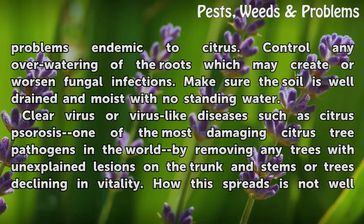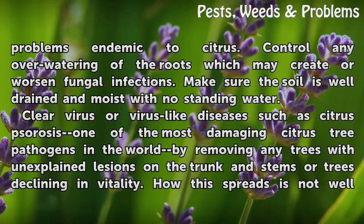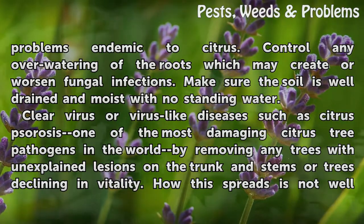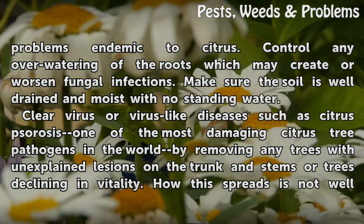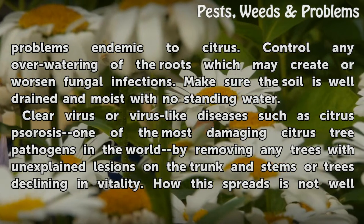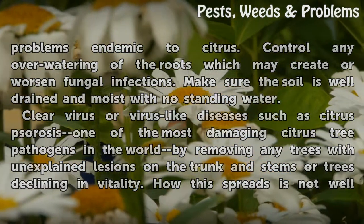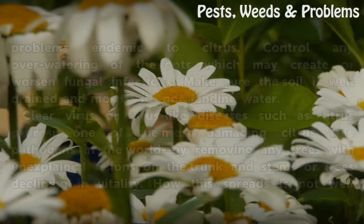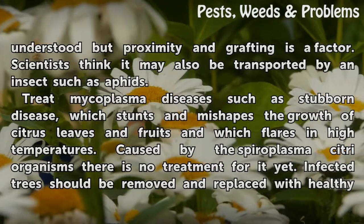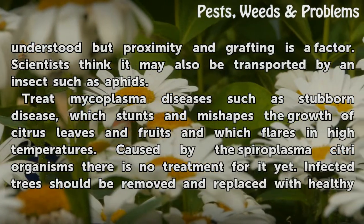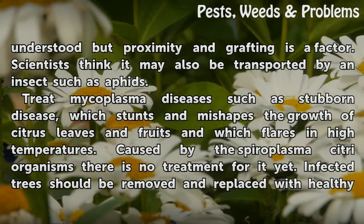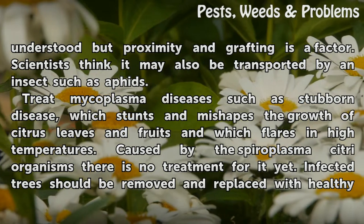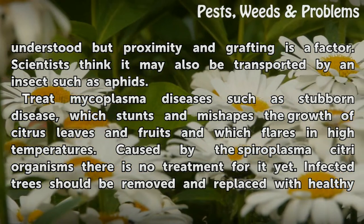Clear virus or virus-like diseases such as citrus tristeza, one of the most damaging citrus tree pathogens in the world, by removing any trees with unexplained lesions on the trunk and stems, or trees declining in vitality. How this spreads is not well understood, but proximity and grafting is a factor. Scientists think it may also be transported by insects such as aphids.